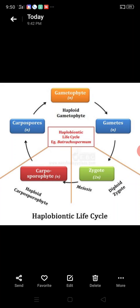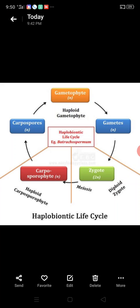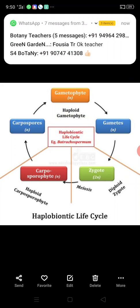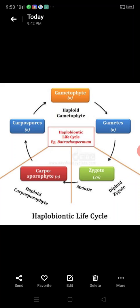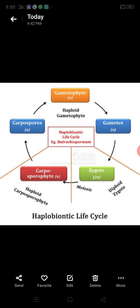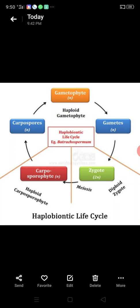In the haplobiontic life cycle, the diploid phase is followed by two dissimilar haploid generations. As the name suggests, the dominant phase is represented by the haploid and multicellular gametophyte. So the gametophyte is the dominant haploid multicellular phase.